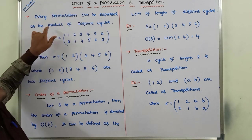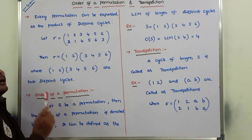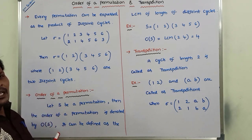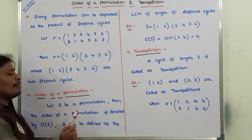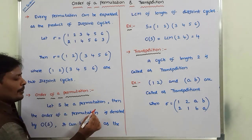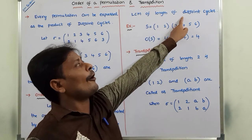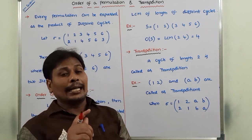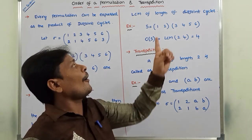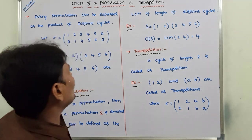Every permutation can be expressed as a product of disjoint cycles. Now we go to the order of a permutation. Let S be a permutation. The order of permutation S is defined as the LCM of the lengths of the disjoint cycles.